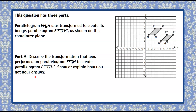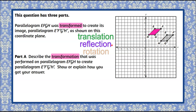Welcome back. So in part A, we're going to describe this transformation that happened to parallelogram E'F'G'H'. I can see that they are the same size and shape, and we have a translation, a reflection, or a rotation. Seeing as reflection and rotation are changing the orientation of the parallelogram, I'm going to start by looking to see if it's a translation.